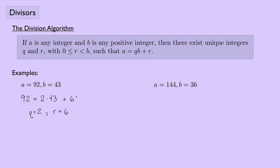Another example: if A = 144 and B = 36, then 144 = 4 × 36 + 0, where 36 goes into 144 four times with a remainder of 0. Here, Q = 4 and R = 0. This is a special case when the remainder is 0.